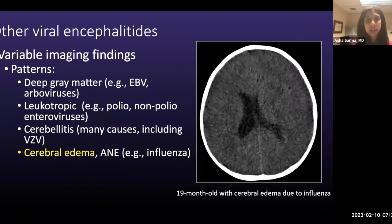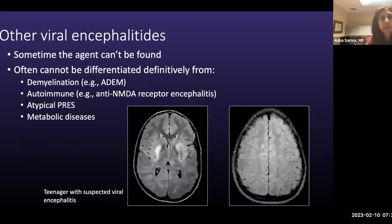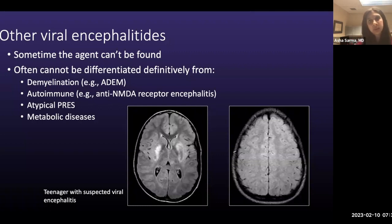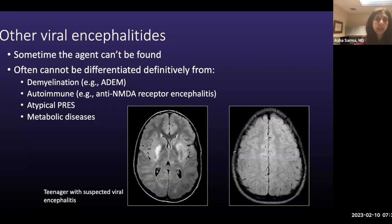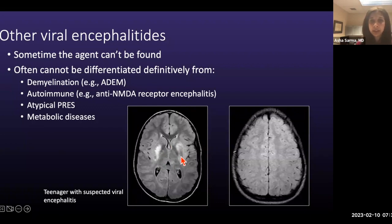You can also get diffuse cerebral edema from viral infections — here's an example from influenza. It's important to remember that sometimes the agent can't be found because imaging findings overlap with non-infectious entities. Differential diagnoses we've encountered include demyelinating conditions such as ADEM with bilateral fluffy scattered lesions involving deep gray and white matter, autoimmune encephalitis such as anti-NMDA receptor encephalitis, atypical PRES, or even metabolic diseases. Here's a troublesome case with bilateral basal ganglia lesions, thalamic involvement, and cortical involvement in both frontal lobes — no underlying cause was ever found.